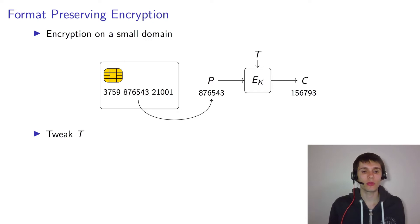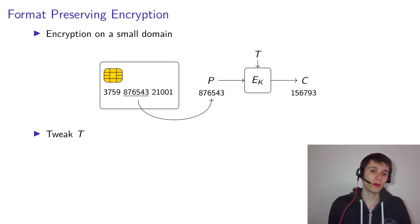So because of this we need a tweak, which is an additional public input parameter that allows you to diversify a block cipher. So every time you take a different tweak, you get a different block cipher which should look ideally independent.